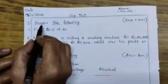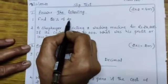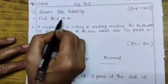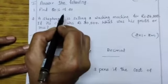First question, answer the following. First bit, find 50% of 20. 50% of 20 means 50 by 100 into 20, simplify and write the answer.